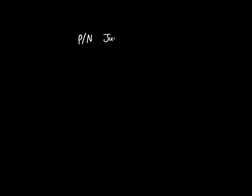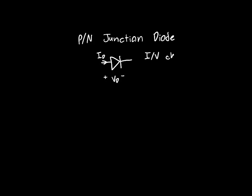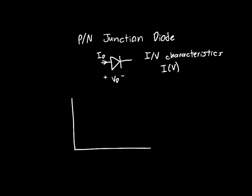In the last few videos we've been talking about the PN junction, and in this video we're going to start using that knowledge to analyze the PN junction diode, which you may have seen its circuit symbol before. The diode in general looks like this if it's drawn on a circuit diagram. Our goal is to find what happens when we apply a voltage across this diode — in other words, how much current flows through it depending on the voltage — or what's called its IV characteristics, which is just a fancy way of saying its current as a function of voltage.